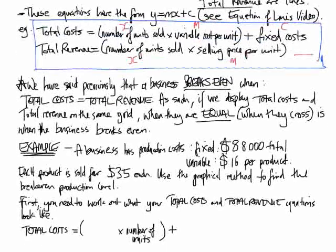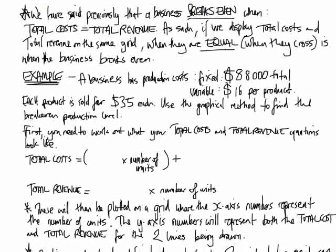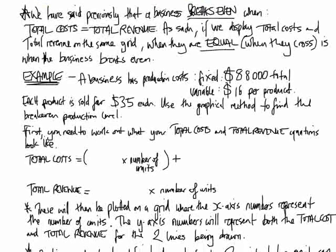We've previously said that a business breaks even when total costs equal total revenue — it doesn't make any money, it doesn't lose any money. When the money earned from selling is exactly equal to what it costs to keep running. So if we display total costs and total revenue as lines on the same grid, when they are equal — which is when they cross over — that is when the business breaks even. We look for the value of x where the lines cross, and that tells us the production level for break-even.